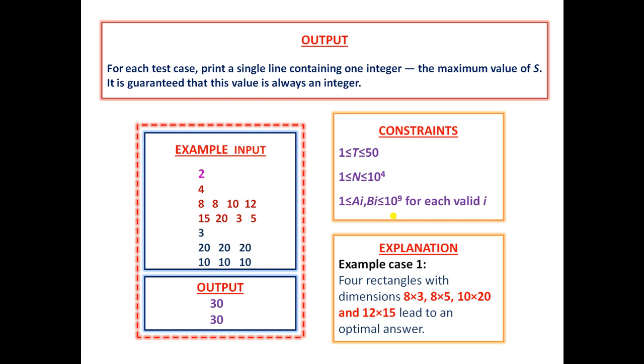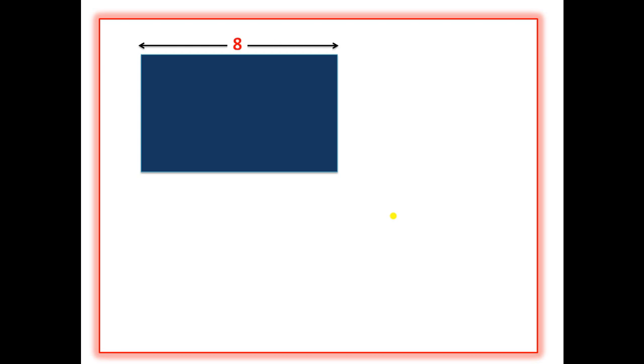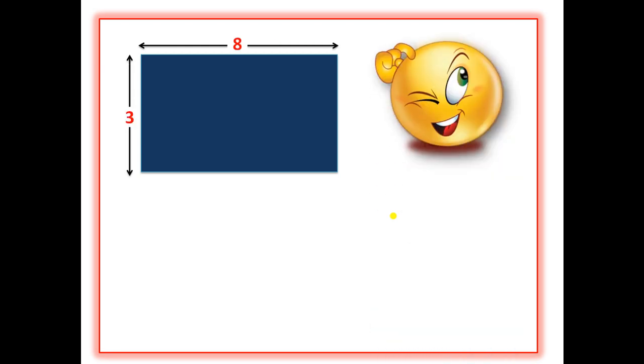Since ai and bi can be very large, our complexity must be O(n). Let's understand the concept of an inscribed circle. For each rectangle, we need to construct an inscribed circle — inscribed means the circle must be completely contained inside the rectangle. Say the dimensions of this rectangle are 8 × 3, so what would the answer be?